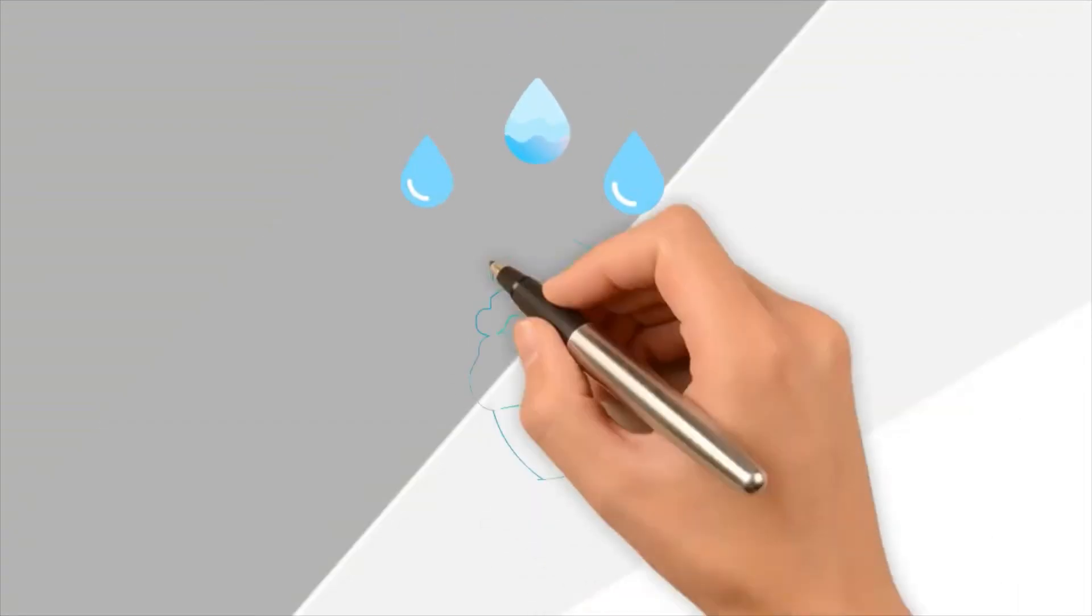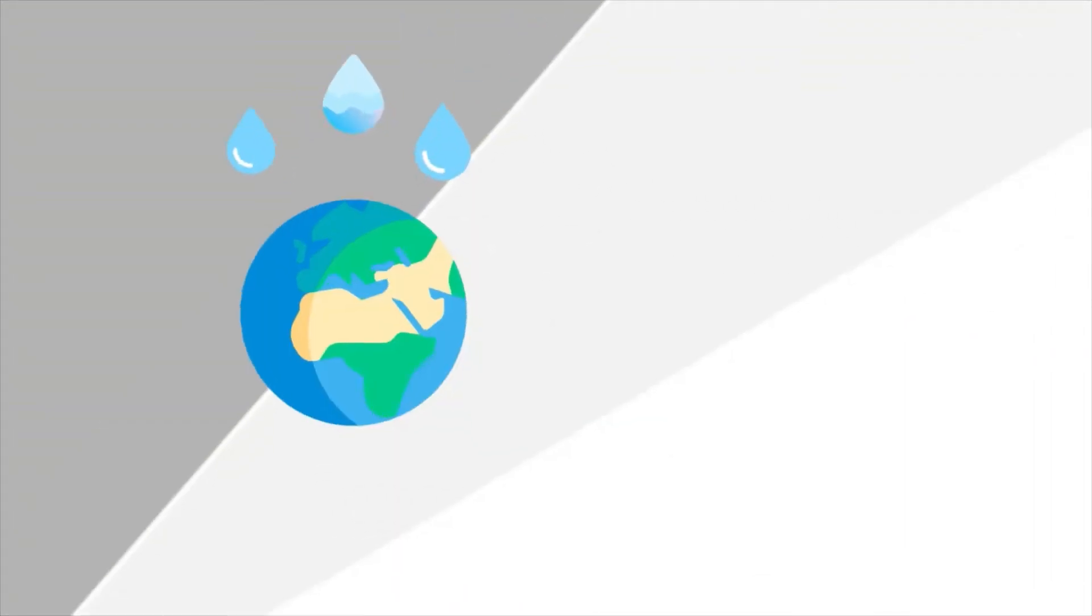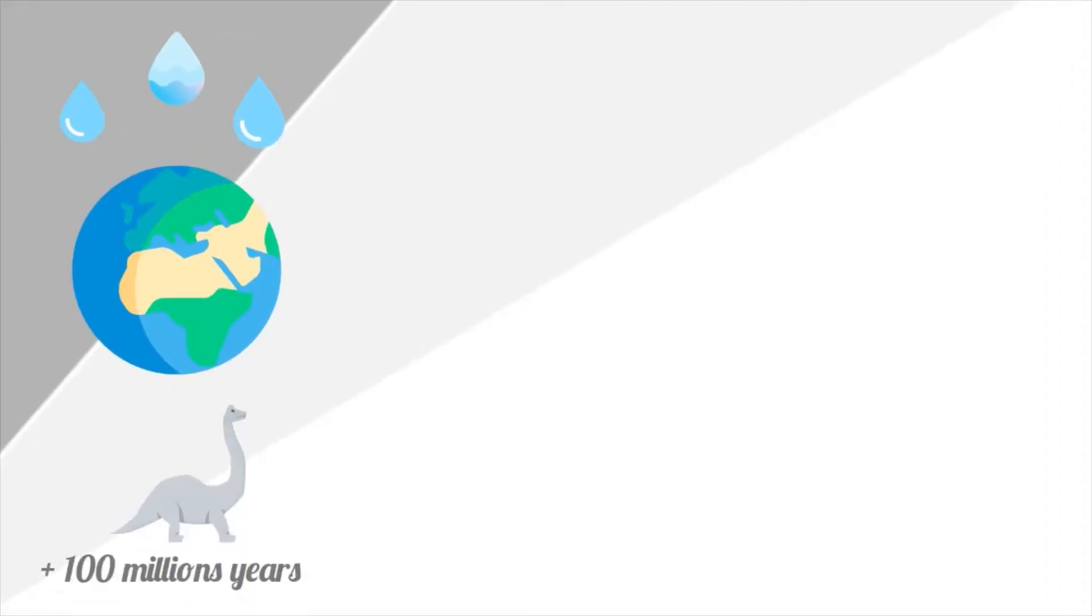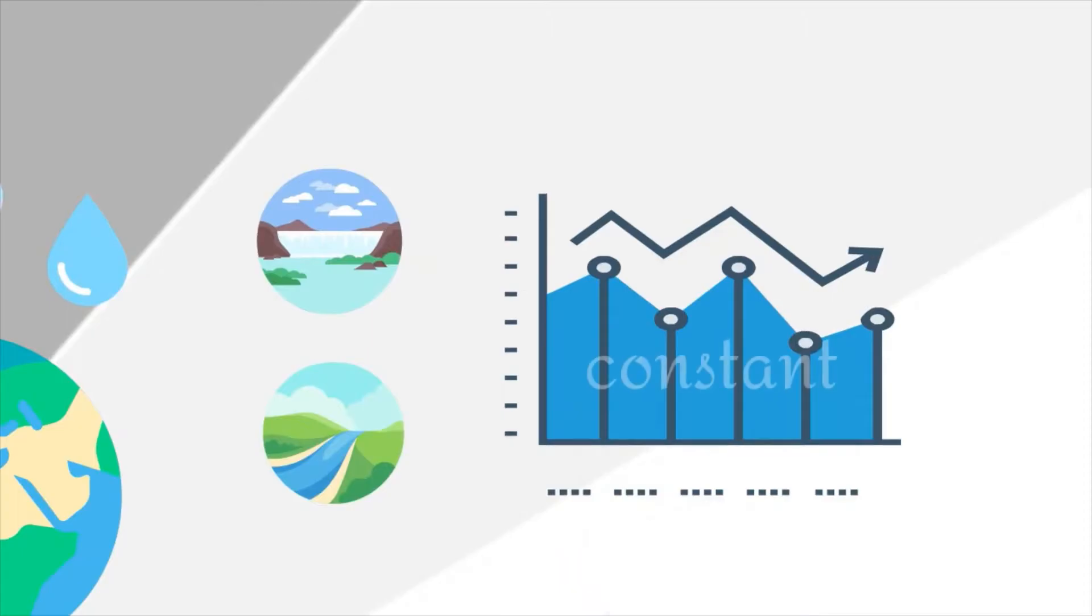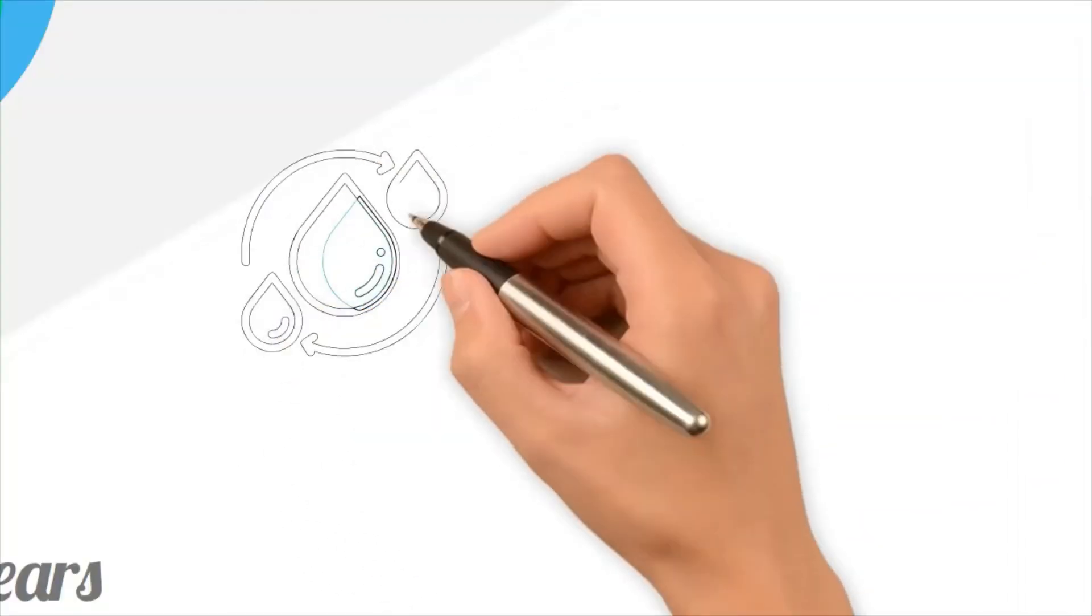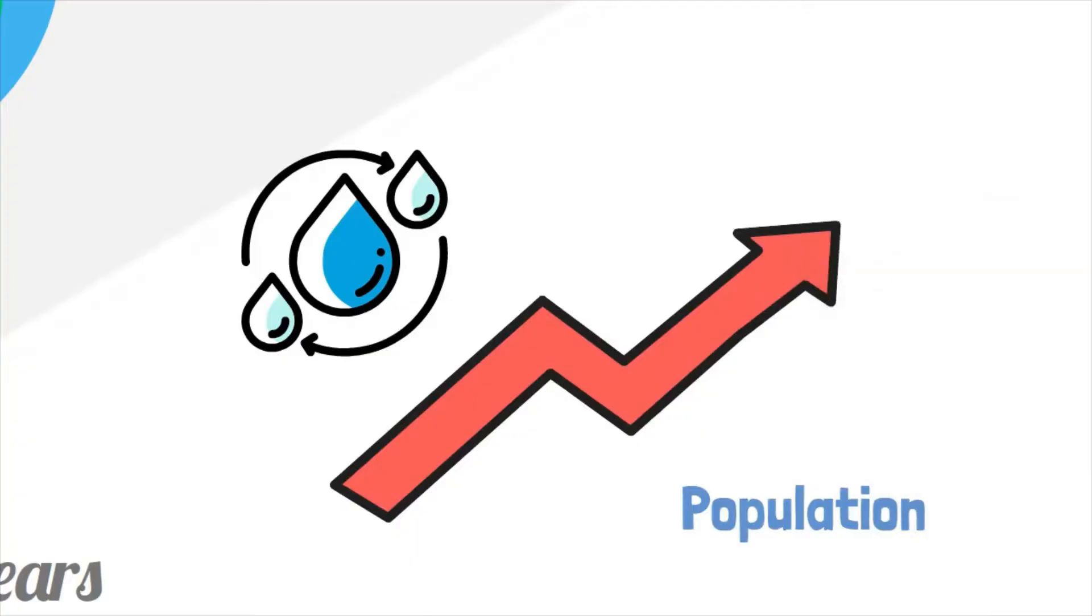The water we drink today has likely been around in one form or another since dinosaurs roamed the Earth, hundreds of millions of years ago. While the amount of fresh water on the planet has remained fairly constant over time, continually recycled through the atmosphere and back into our cups, the population has exploded.